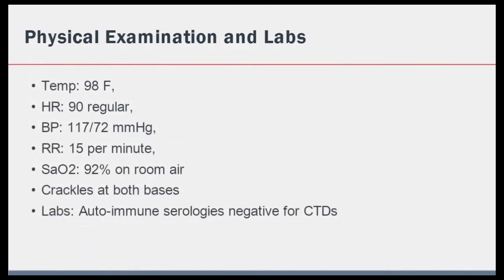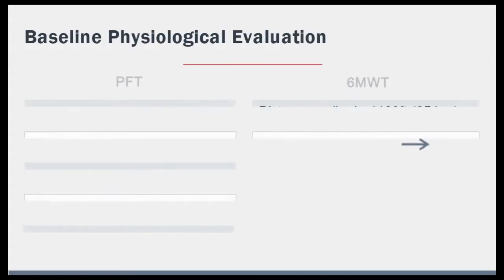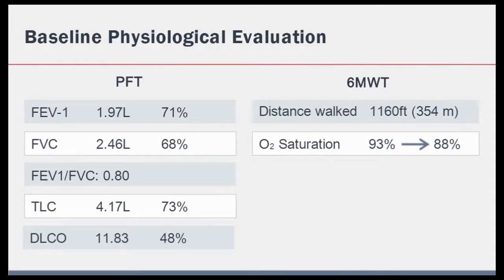Pertinent positives on the physical examination included mild to moderate oxygen desaturation at rest, with a resting oxygen saturation of 92% on room air, and bilateral basilar crackles. Laboratory evaluations looking for autoimmune diseases were unrevealing for a definite connective tissue disease. Baseline pulmonary function tests revealed a mild restrictive disease along with moderate reduction in the diffusion capacity. Six-minute walk test revealed mild to moderate exertional oxygen desaturation to 88% on room air.